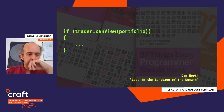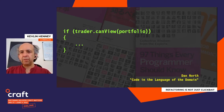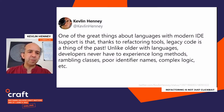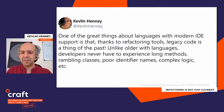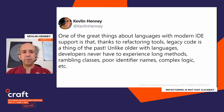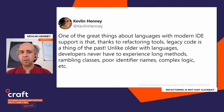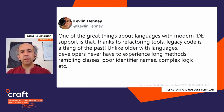Now the point is that many people hoped that once you've got automated refactorings, legacy code would be a thing of the past. I tweeted: 'One of the great things about languages with modern IDE support is that thanks to refactoring tools, legacy code is a thing of the past. Unlike with older languages, developers never have to experience long methods, rambling classes, poor identifier names, complex logic.' Because why would you have these things if you've got an automated refactoring? What actually triggered this was last week I saw some C# code with a method about 1,500 lines long. They had refactoring tools — the tools that come with Visual Studio are perfectly adequate to break that up. You don't even need ReSharper. Why do we let ourselves have this? We have the tools.